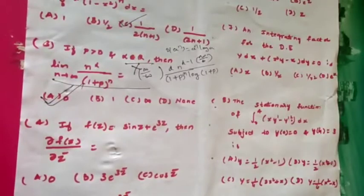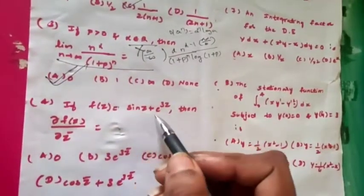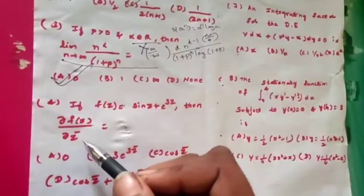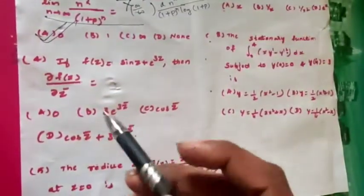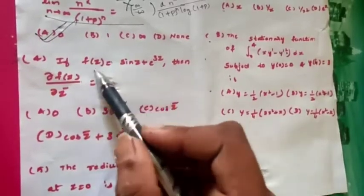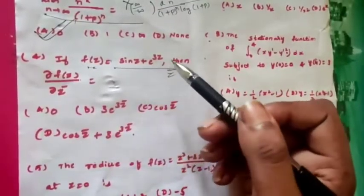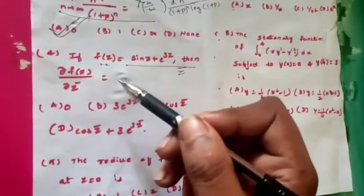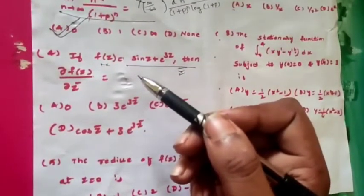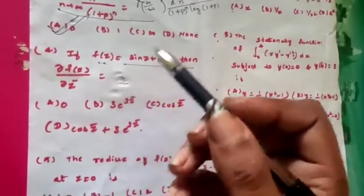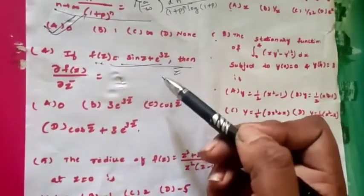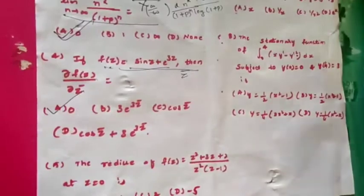If f(z) = sin(z) + e^(3z), find ∂f/∂z̄. This is from complex analysis — we differentiate partially with respect to z-conjugate (z̄). In f(z) there is no term involving z̄. Therefore when differentiating partially with respect to z̄, all other terms are treated as constant. Since there is no z̄ term in this function, the answer is directly zero.